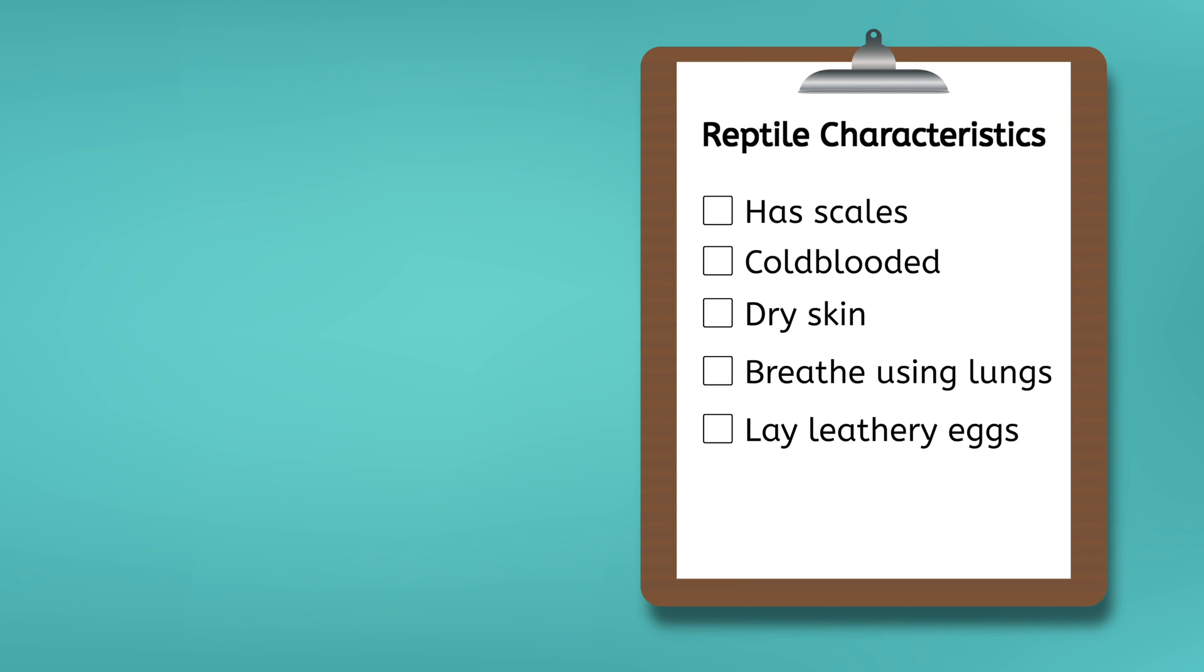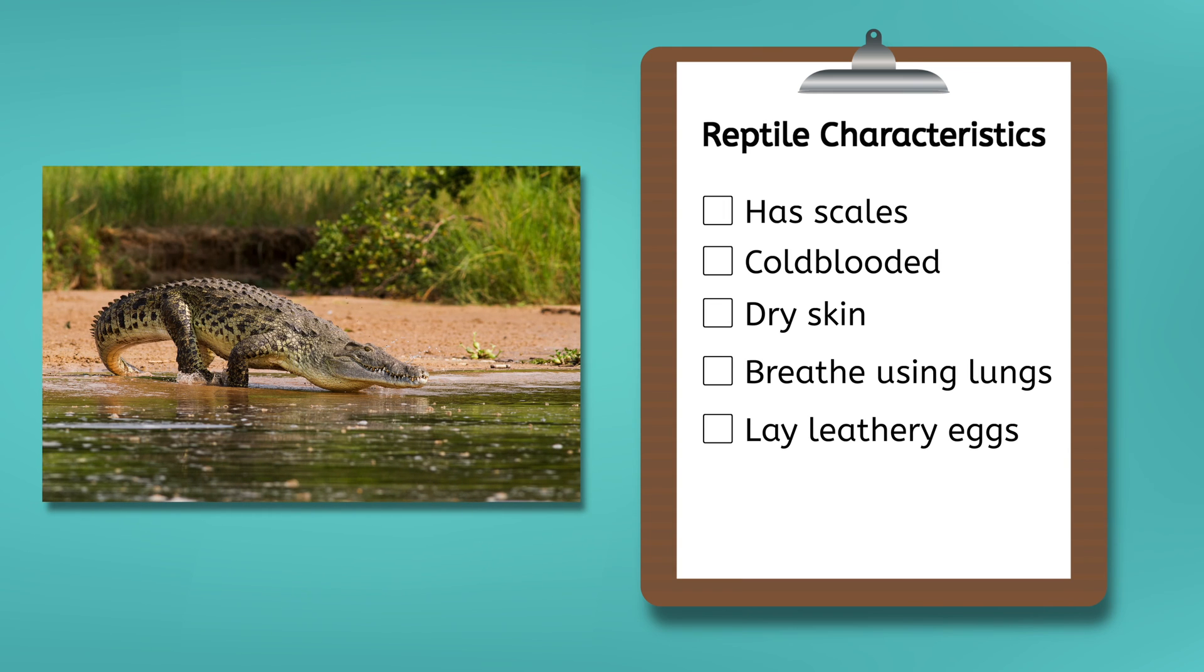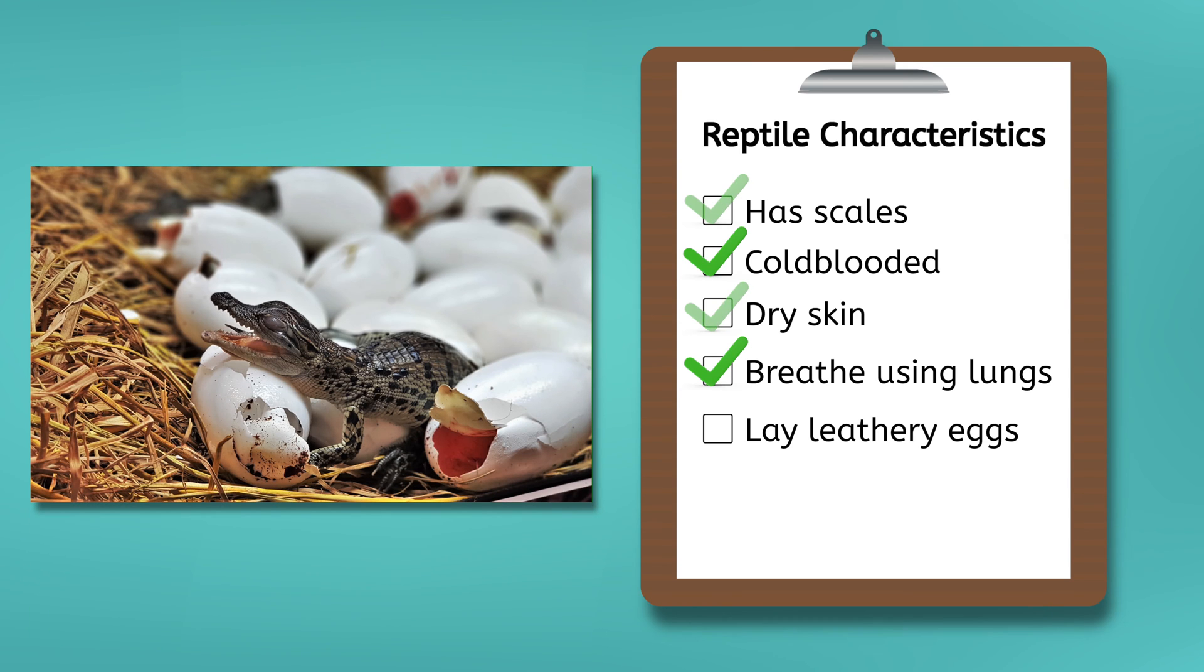Let's take a look at a few different animals and decide whether they are reptiles or a different class of animal. We can use this chart to help us decide. A crocodile. Let's see. A crocodile is a cold-blooded animal that can be found in water, but it doesn't always stay underwater. This must be because it has lungs instead of gills. It also has dry, scaly skin, crawls on four legs, and gives birth by laying leathery eggs. Is a crocodile a reptile? Yes!